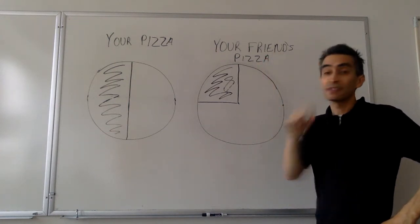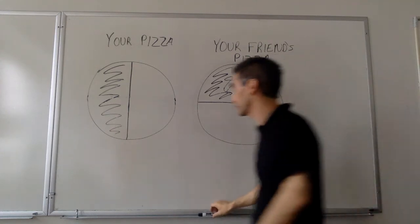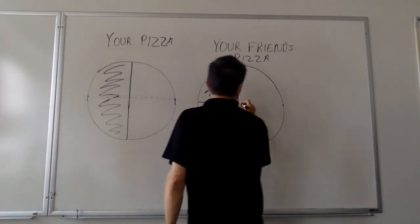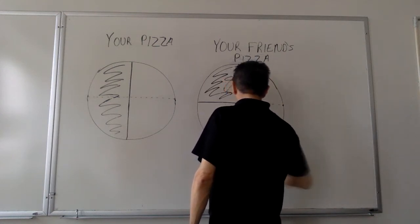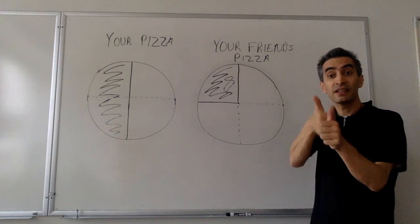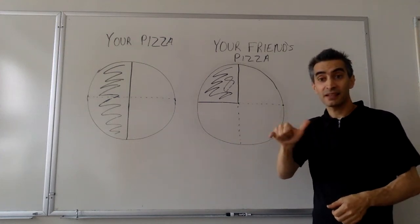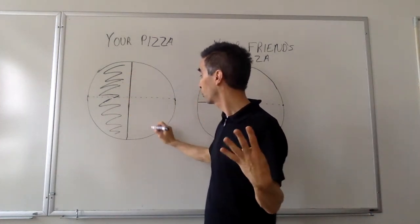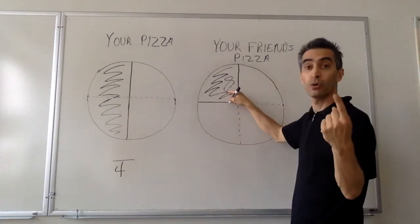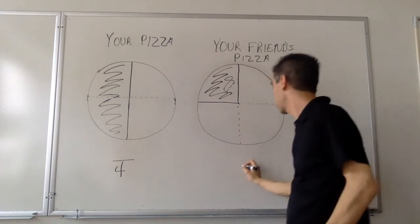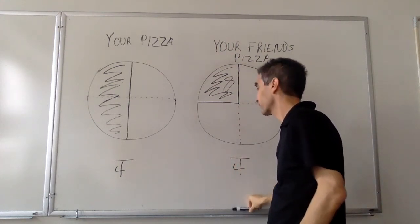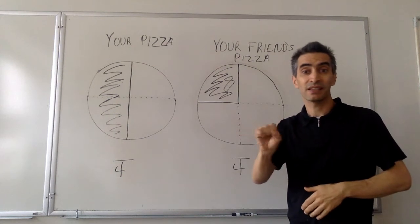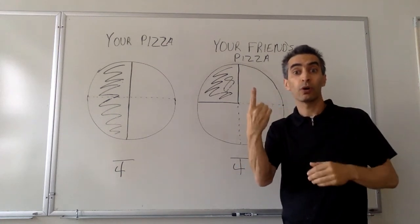I know, I've got an idea. Suppose each pizza is the same size. Now each pizza has the same size parts. We've got one, two, three, four parts here, and one, two, three, four parts here. That four in the denominator represents the number of same-size parts that equal one whole pizza.